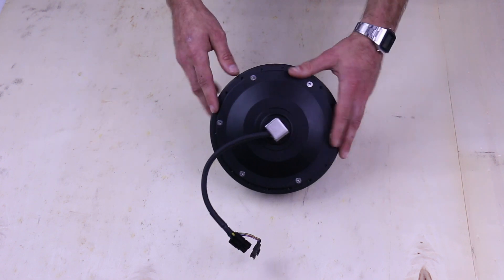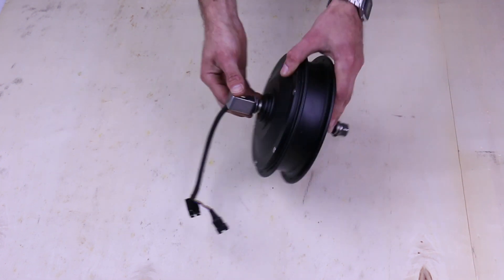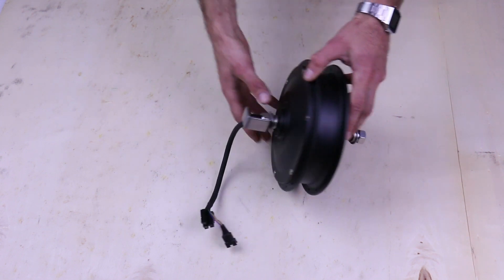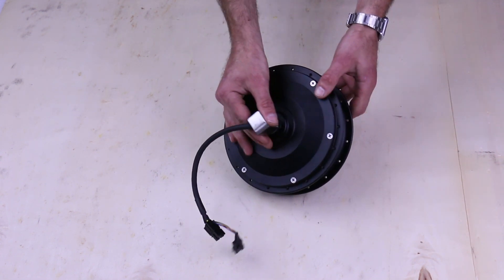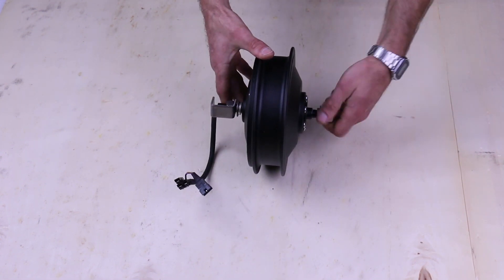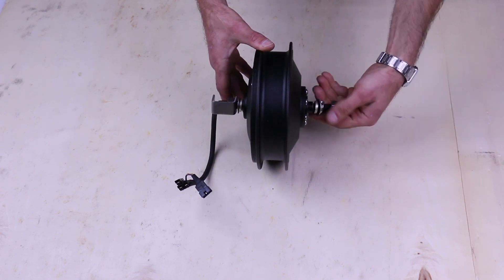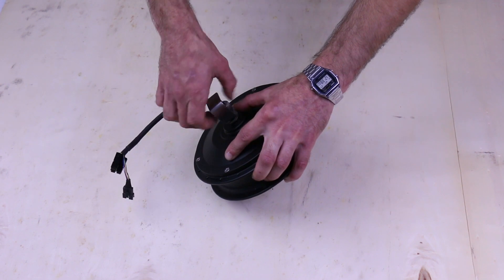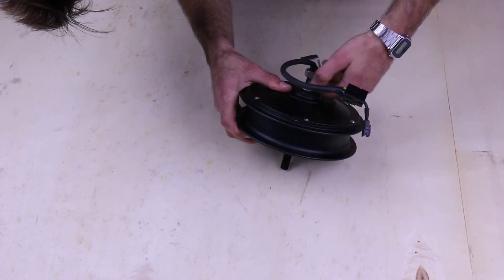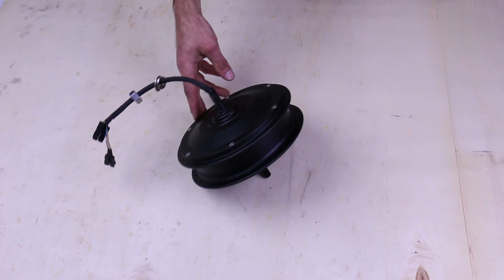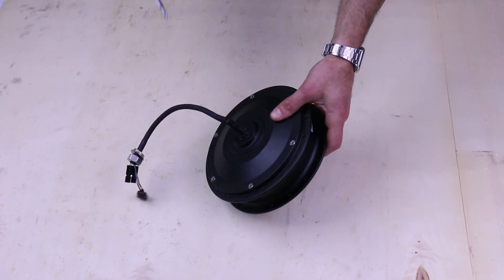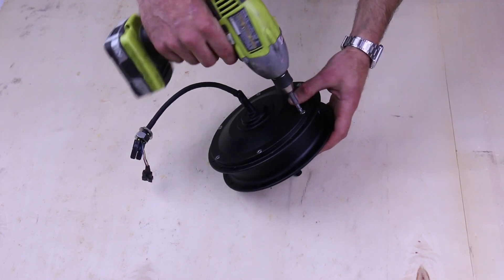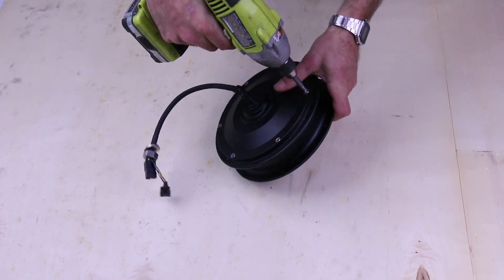On the front eZee motor, because that side plate is separate, we can just go ahead and start removing the hardware. You want to grab your drill or hand screwdriver and remove the Phillips number 2 head screws here.